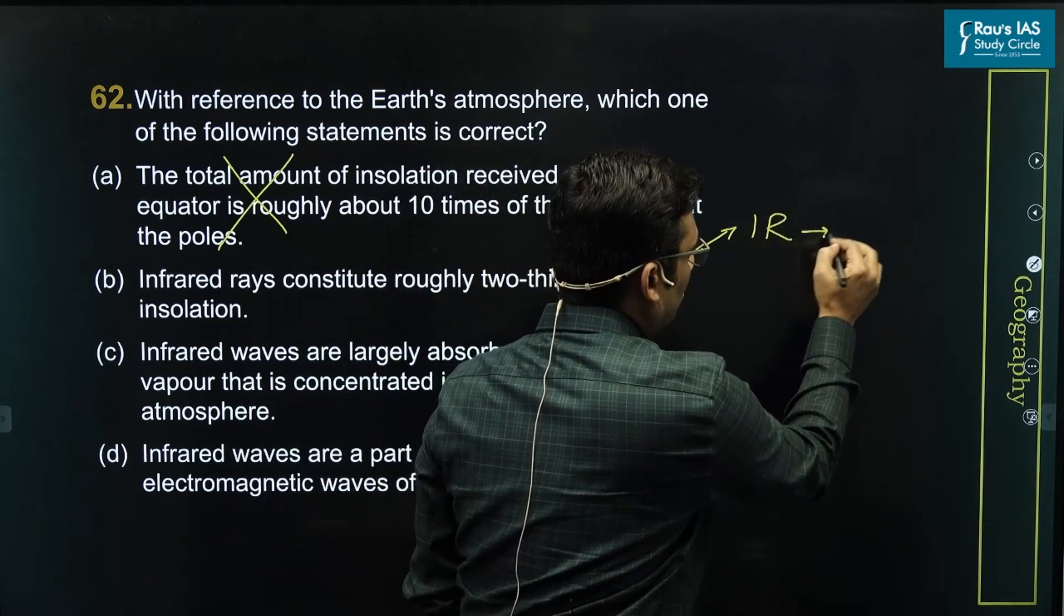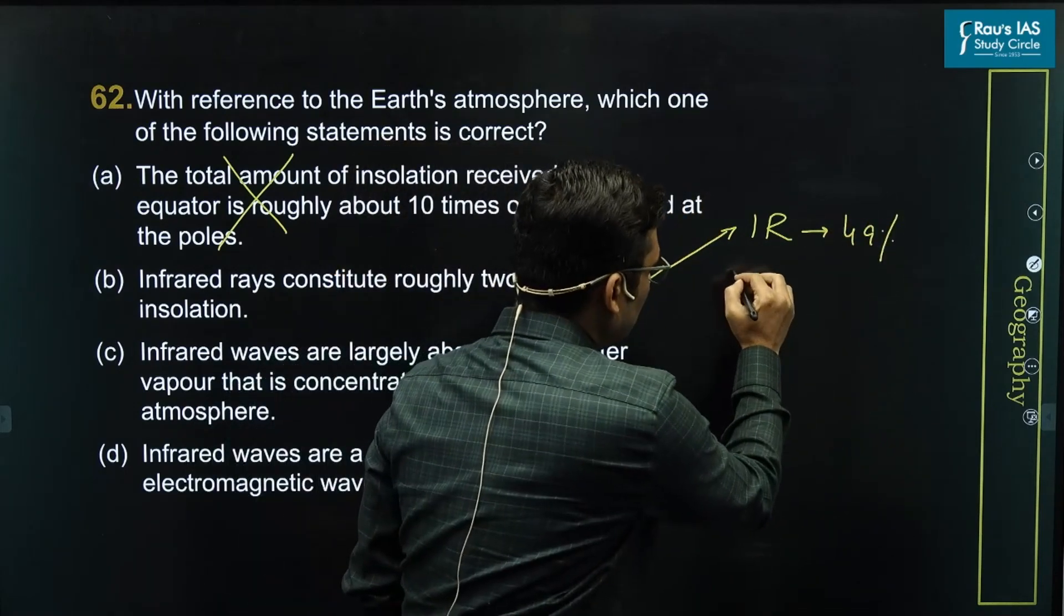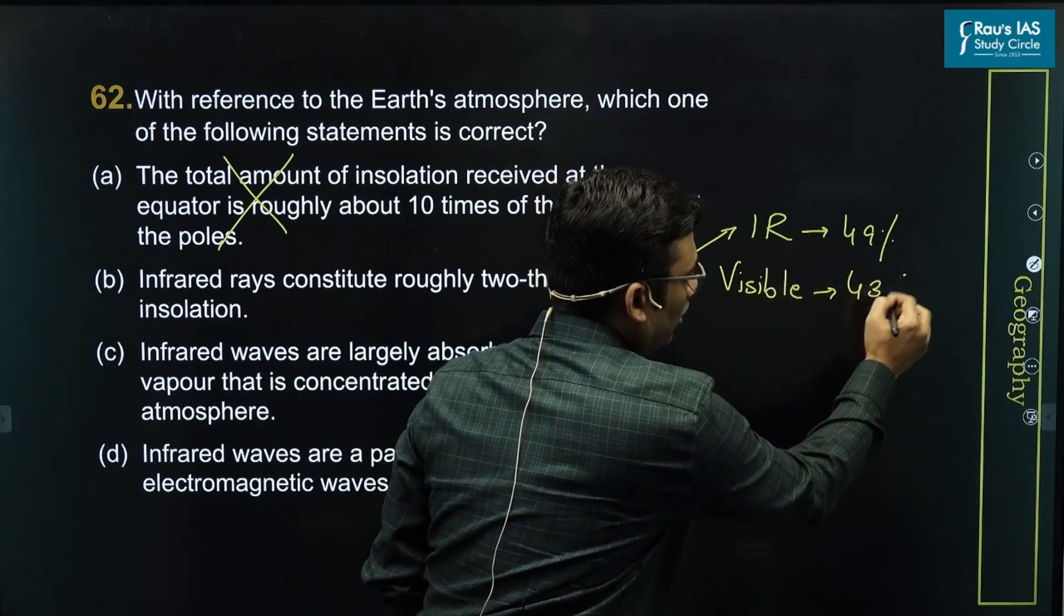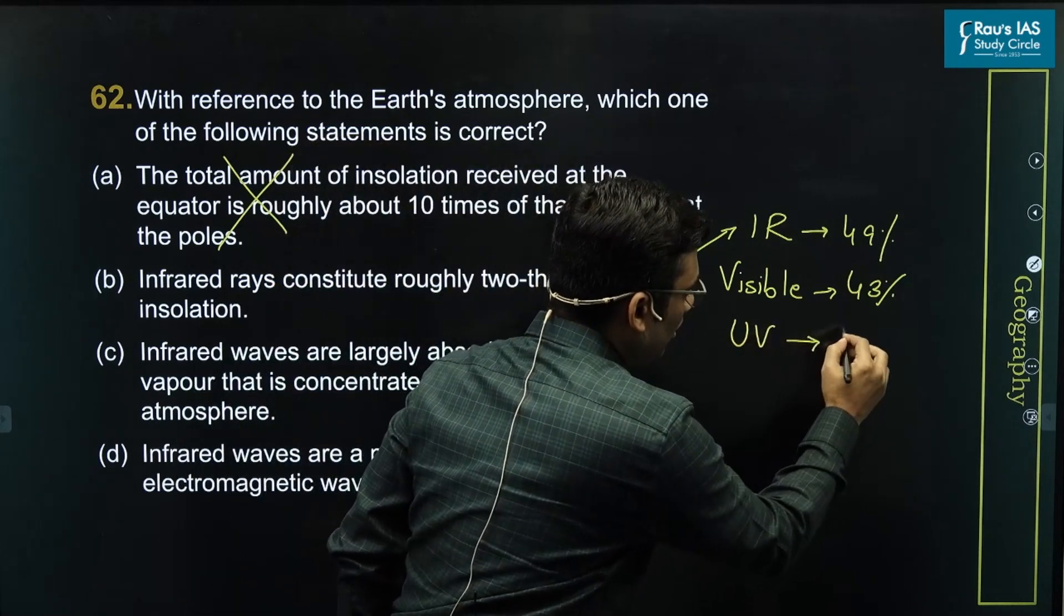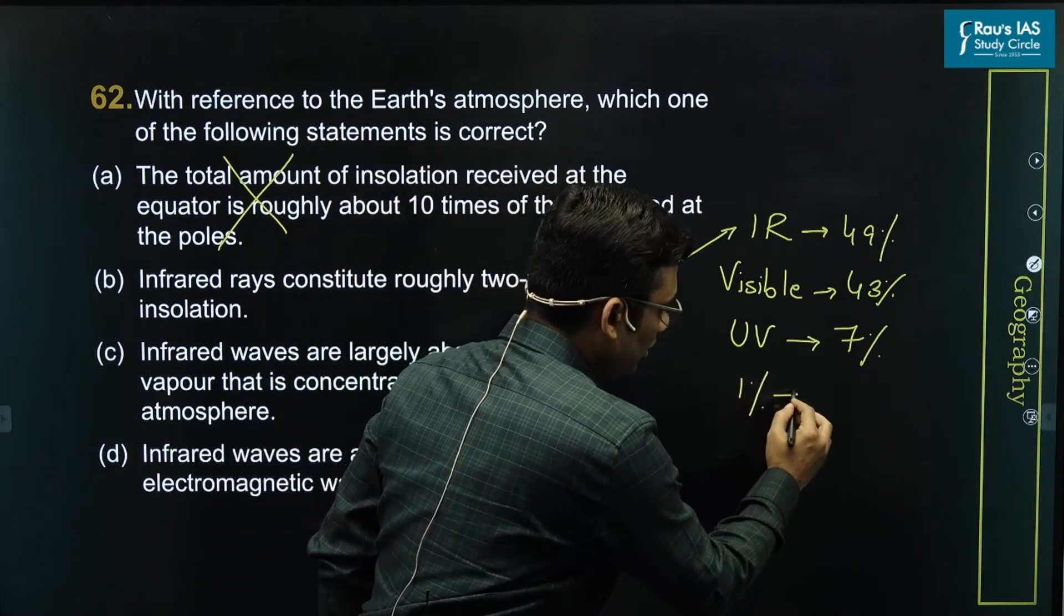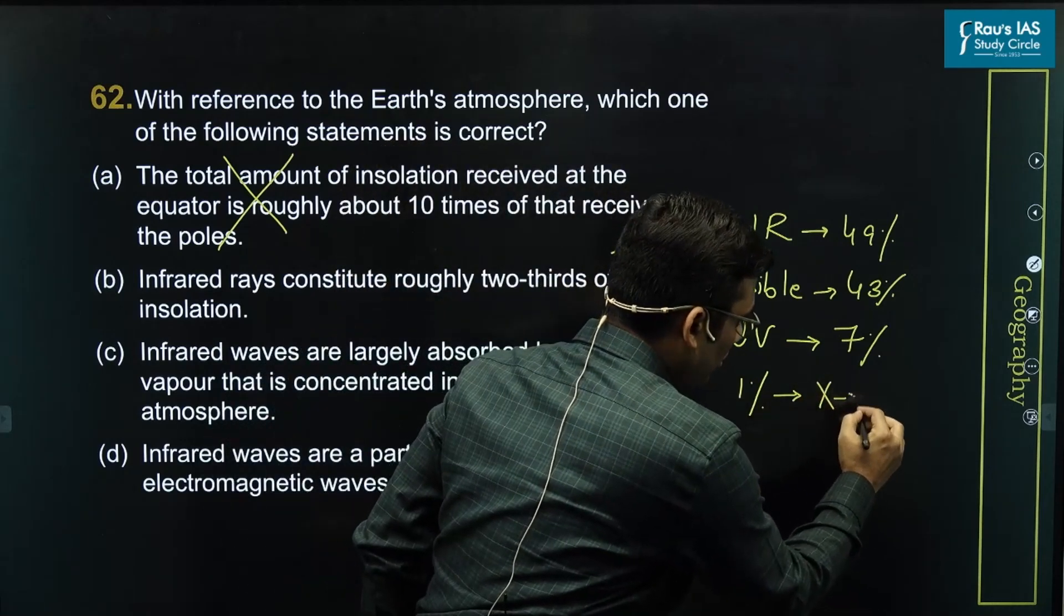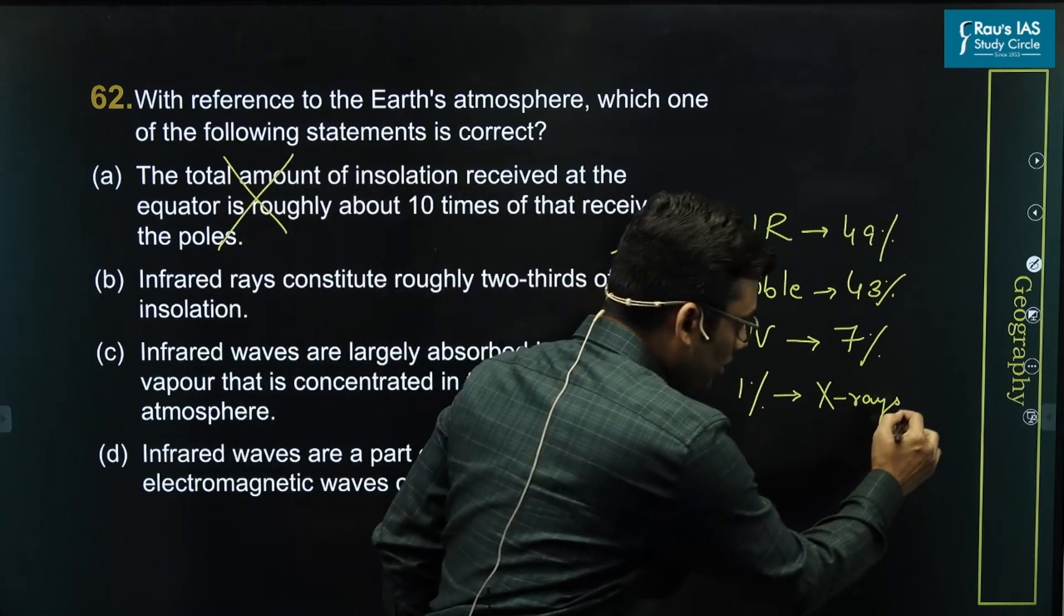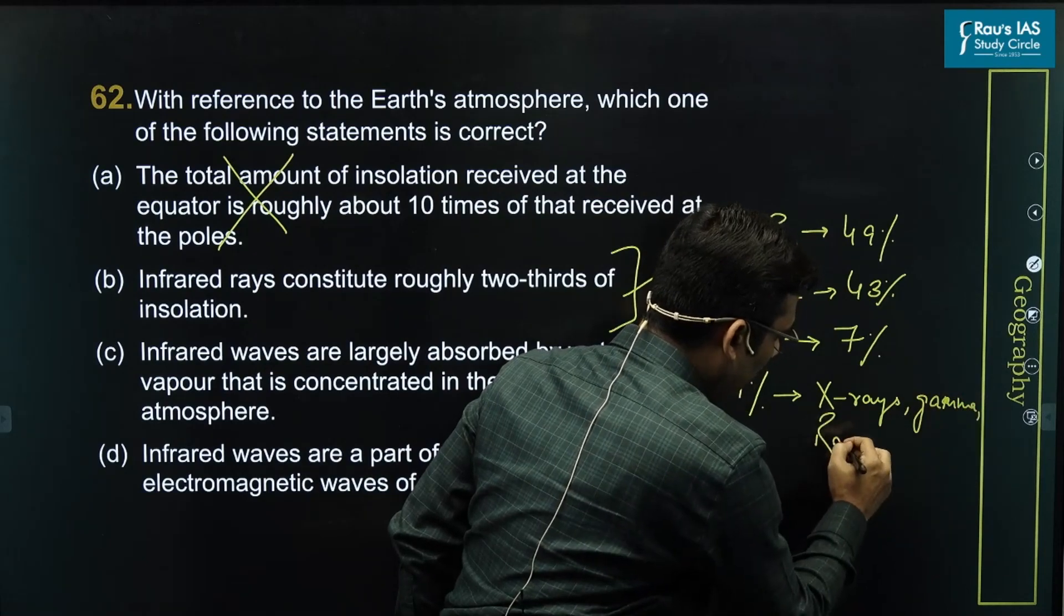Based on that, infrared radiation constitutes almost 49 percent of the insolation, whereas visible light constitutes 43 percent. Apart from that, ultraviolet radiation constitutes almost 7 percent, and the remaining 1 percent energy is emitted in wavelengths which include X rays, gamma rays, and radio waves.